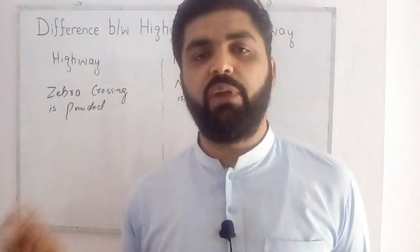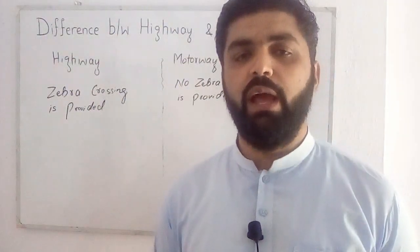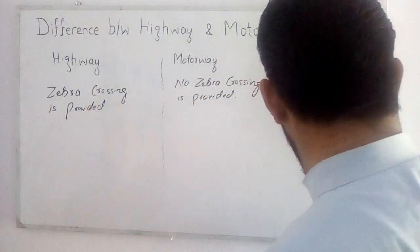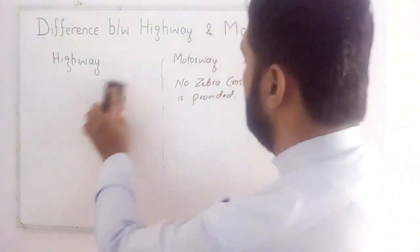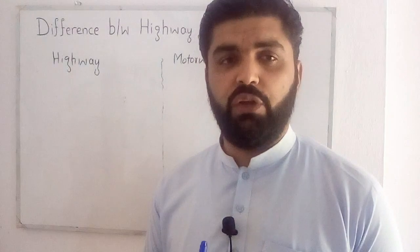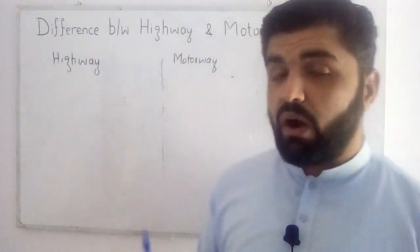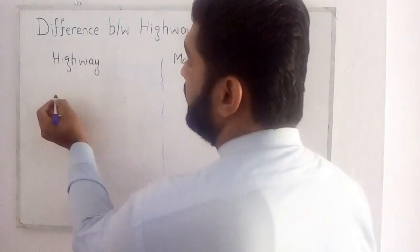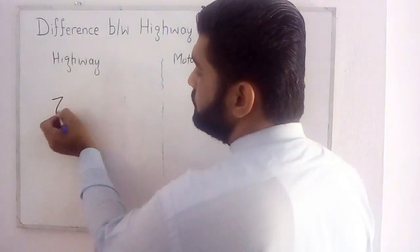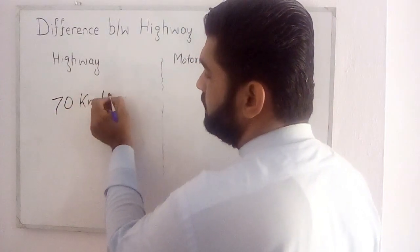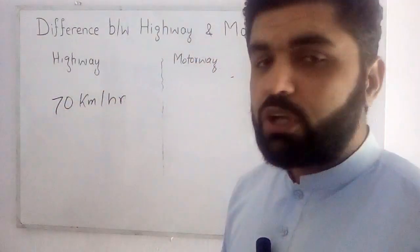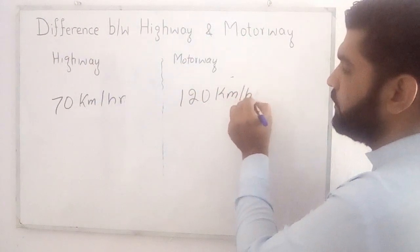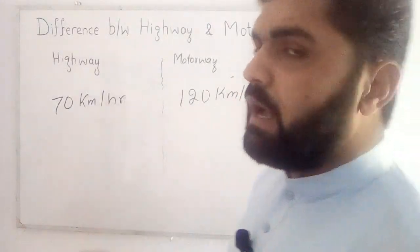The fifth and last difference between highway and motorway is about speed. A highway is usually designed for low speed, with a design speed of about 70 km per hour, while a motorway is designed for high speed, approximately 120 km per hour.